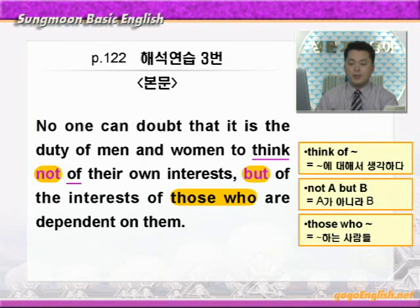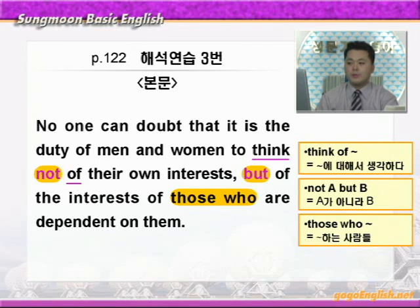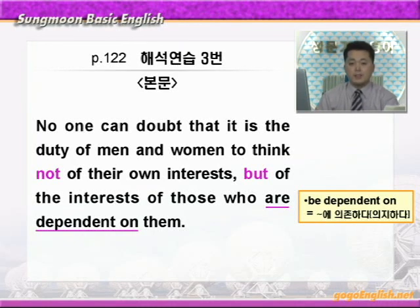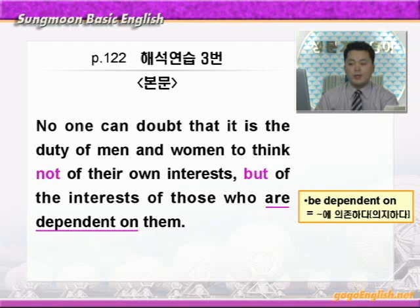'those who'에 동그라미 쳐보면, 'those who'는 '뭐뭐 하는 사람들' 이런 뜻이죠. 정말 자주 나오죠. 'but of the interest of those who' — 뭐뭐 한 사람들의 이익을 생각하는 것이 모든 사람들의 의무이다. 어떤 사람들이죠? 'those who are dependent on them' — 'be dependent on'에 밑줄 쳐보세요. 'be dependent on'은 '뭐뭐에 의존하다, 의지하다' 이런 뜻이죠. 여기 them은 앞에 나온 men의 의미를 가리키죠. 그들에게 의존하고 있는 그런 사람들의 이익을 생각하는 것이 모든 사람들의 의무이다.